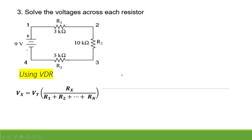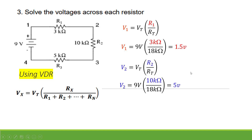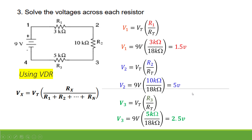Now solving the same problem using the voltage divider rule (VDR). If you want to solve for V₁, the total voltage is multiplied by R₁ divided by the total resistance. That is 9 volts multiplied by 3 kΩ divided by 18 kΩ, and you get 1.5 volts. Similarly, V₂ is the total voltage multiplied by R₂, and V₃ is the total voltage multiplied by R₃ divided by the total resistance, giving 2.5 volts. You get the same results using the voltage divider rule.